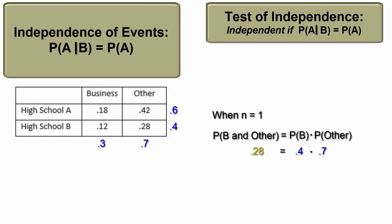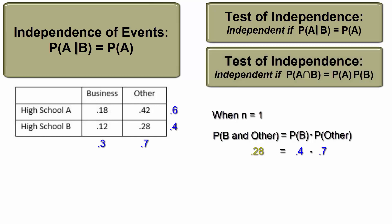And this leads to the second test for determining independence of events and probability. If the probability of A intersect B is the same as the product of the two individual probabilities, then the two events are independent.